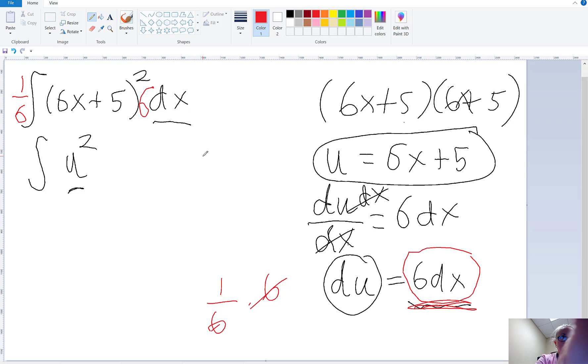Instead of 6dx, I can write du. And there's that simple integration I did earlier, u to the 3rd over 3 plus c, but don't forget, there's a 1/6 out here. So I'm going to clean that up a little bit.